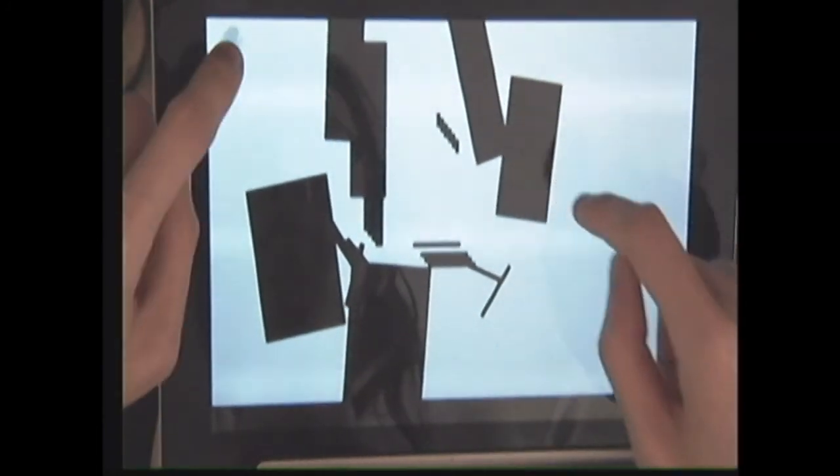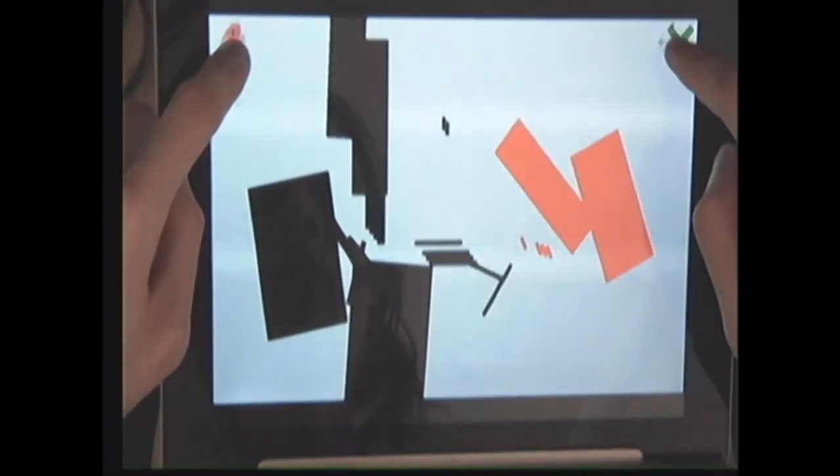Delete objects by dragging them to the X that appears during a clutch. Tap the X to confirm. Delete everything by double tapping the smudge to select everything, begin moving them, clutch them, and delete them.